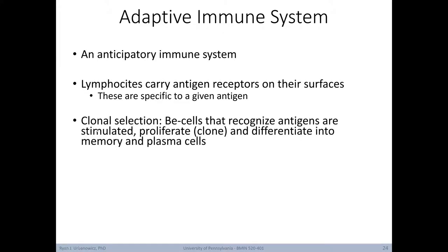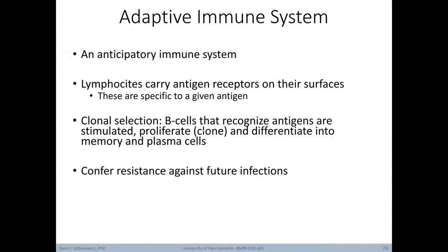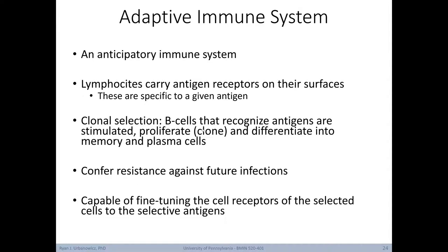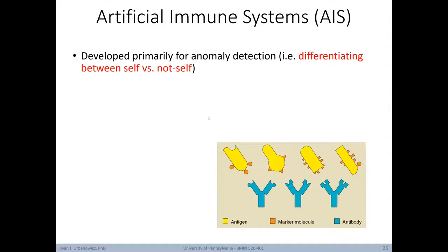When it comes to clonal selection, B cells that recognize antigens are stimulated and then proliferate — cloning themselves — and differentiate into both memory and plasma cells. These confer resistance against future infections and are capable of fine-tuning the cell receptors of selected cells to the selected antigens.